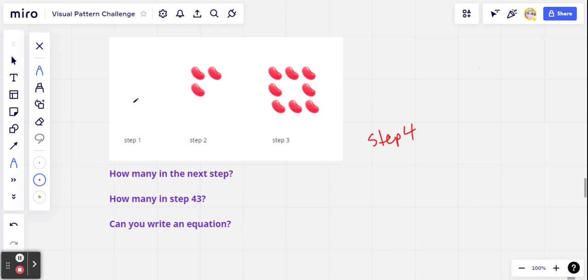All right, so this one's a little different because it doesn't have anything in step one, so I guess zero jelly beans is what we have in step one. We've got three in step two, and then this is like a hollow square, so what is that? Eight in step three.